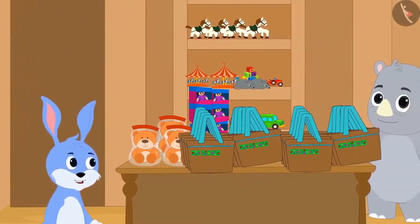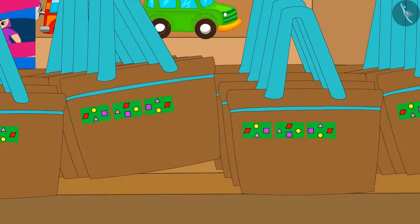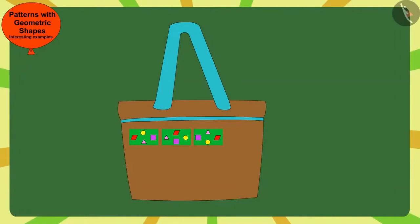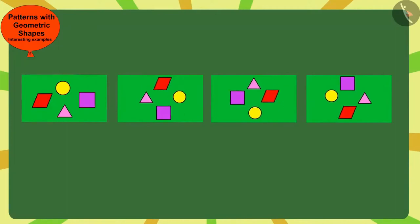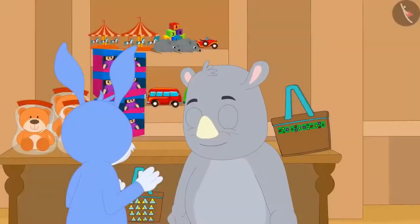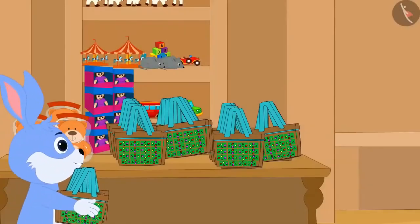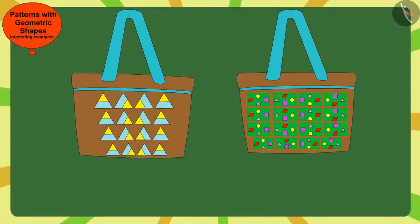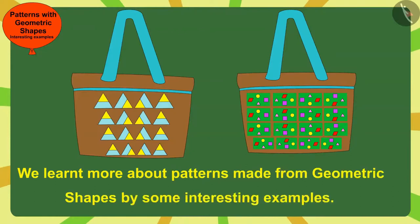The next day, when Bunny went to Gagu's shop, he noticed that Gagu is now selling bags of this new pattern. Children, can you find the rule of this pattern and complete it? Here, each time Gagu has made this pattern by rotating this rectangle a quarter in the clockwise direction. When Gagu saw the bag completed by Bunny, he liked it very much. Both Gagu and Bunny started making more beautiful bags together. Children, in this video we learned more about patterns made from geometric shapes by some interesting examples. In the next video, we will see some common mistakes related to this.